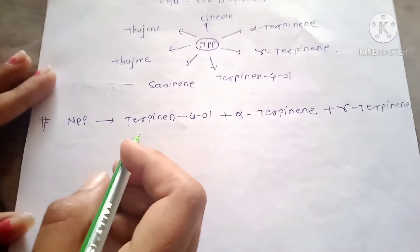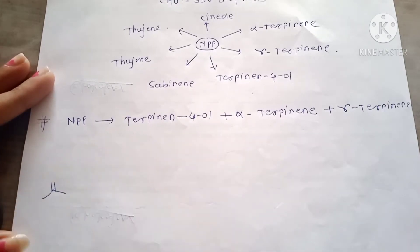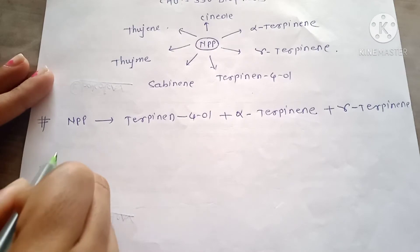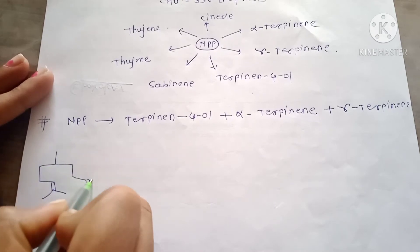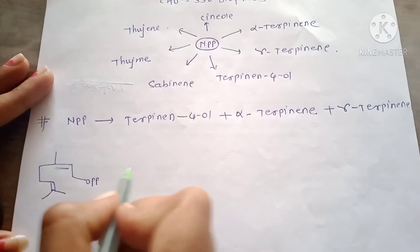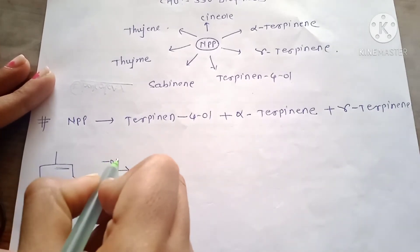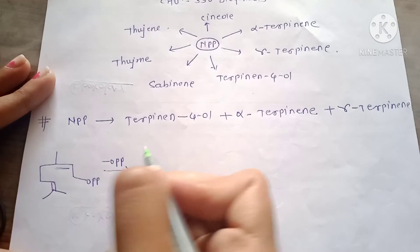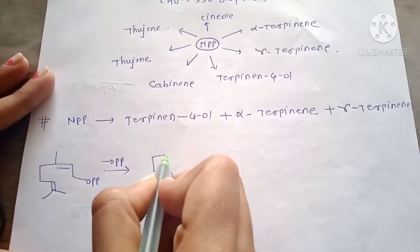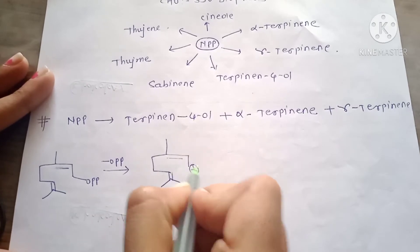Okay, first draw the structure of NPP. Step one is the loss of OPP and we will get the allylic carbocation, here positive charge.